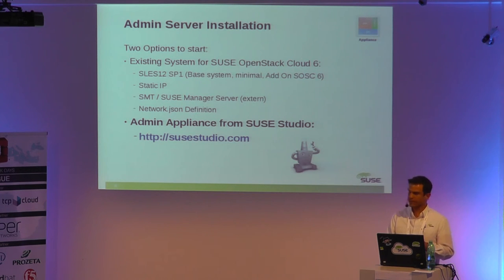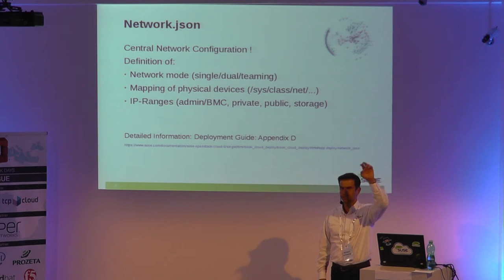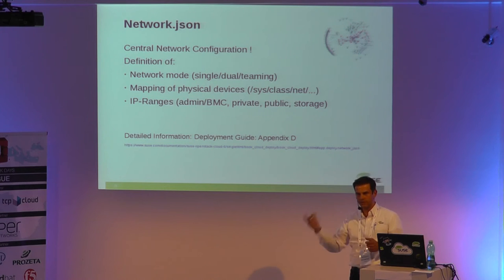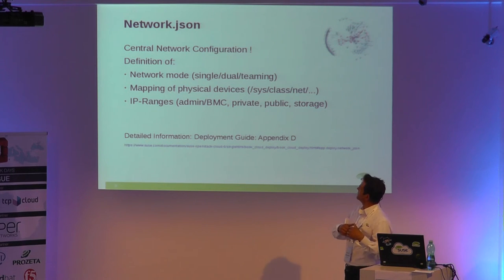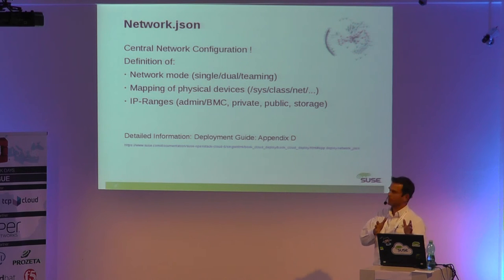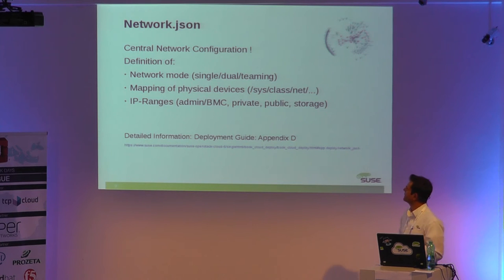The network JSON file is very important. It is the definition of your network setup. There are different modes depending on how many network ports you have and how much load will go through your network. We have single teaming, where you can run all network parts together; bonding, where you can also run admin and instance networks on the same bond; and dual, where your admin network is separate from the normal operation network. You also have to understand the mapping of your physical network devices and adapt the IP ranges to your setup.